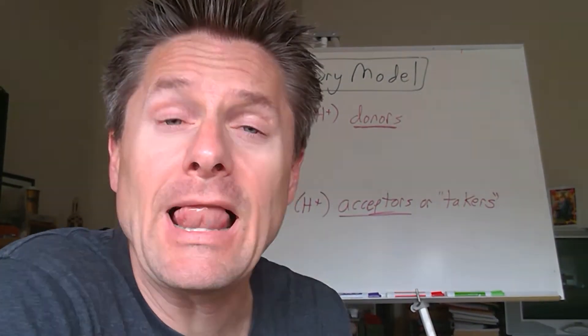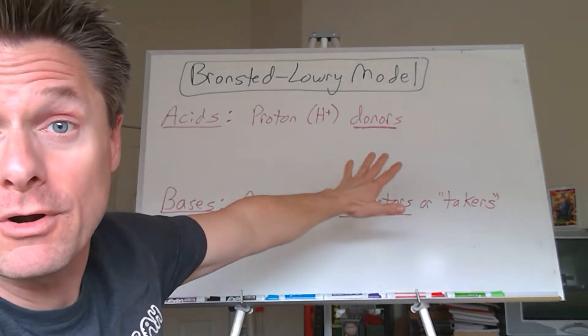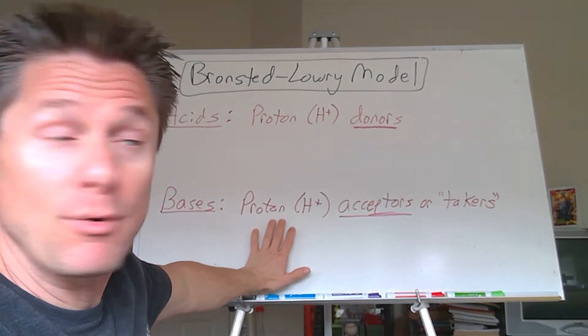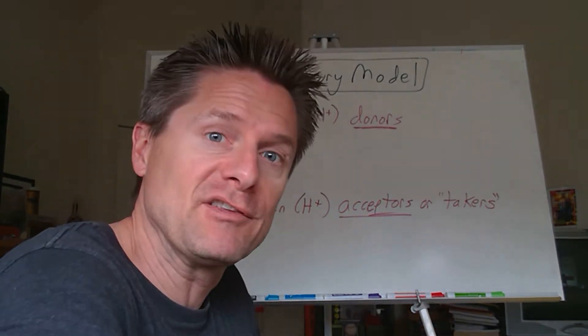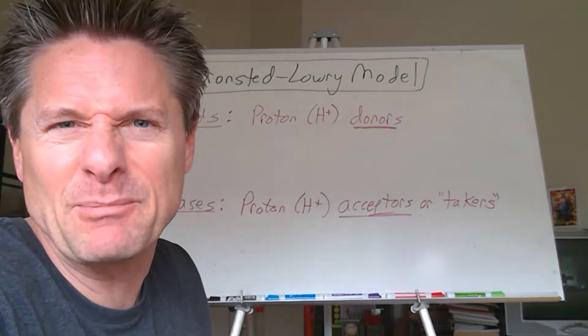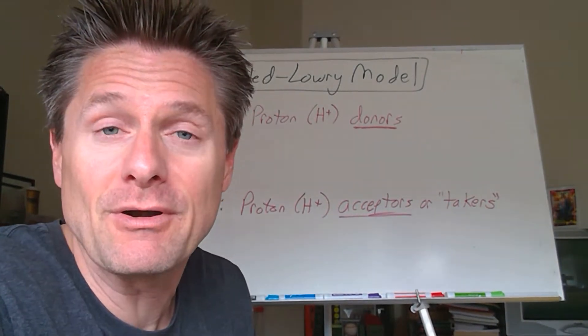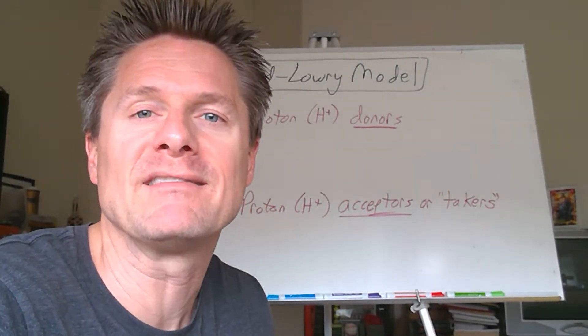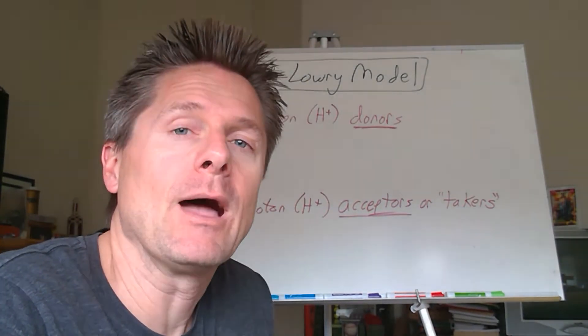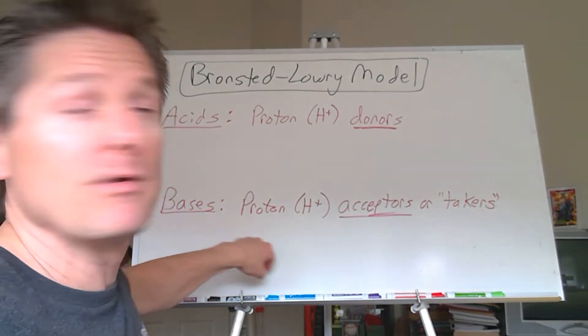For the Bronsted-Lowry model, if you remember from your prior classes, acids are defined as anything that's a proton donor or H+. Bases are the opposite of that, proton acceptors, or you can think of them as takers. Because sometimes an acid, especially if it's really strong, will just shove its proton onto a base, whether the base wants it or not. If you have a strong base, it's going to be grabbing H+ from different acids, whether the acid wants to give it to it or not. So let's do an example of each as a quick little review.